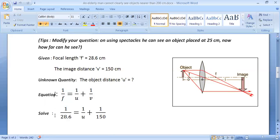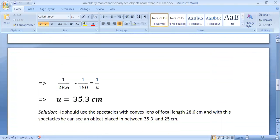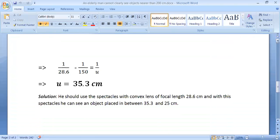Let us solve by substituting the values: focal length equals 28.6 centimeters, U is what we need to find, and image distance V equals 150 centimeters, since the lens cannot focus rays less than 150 centimeters behind the eye. On solving, we obtain U equals 35.3 centimeters.